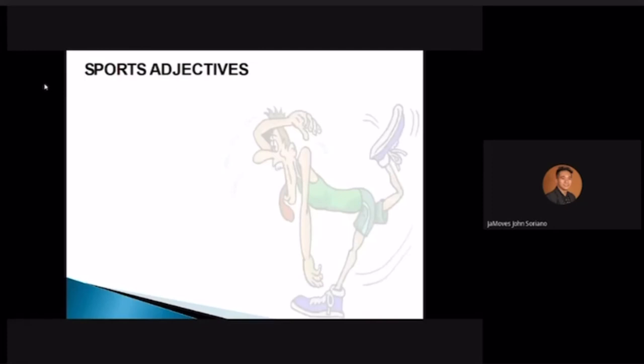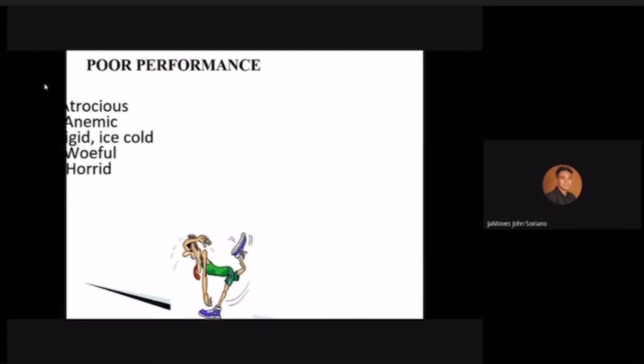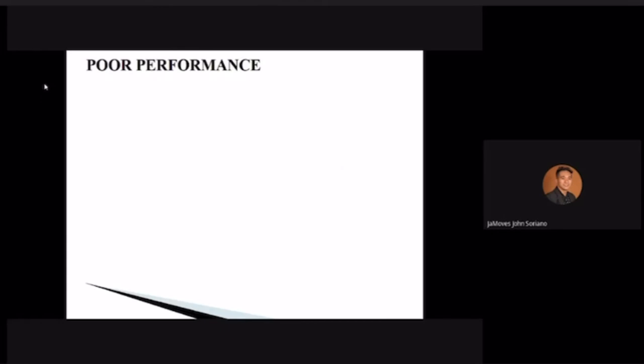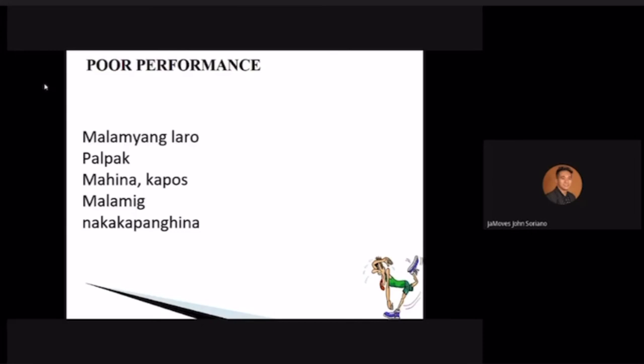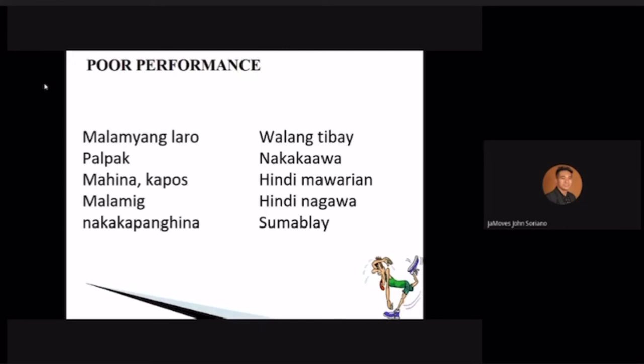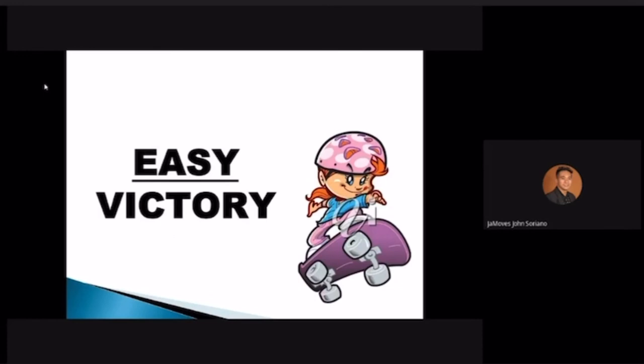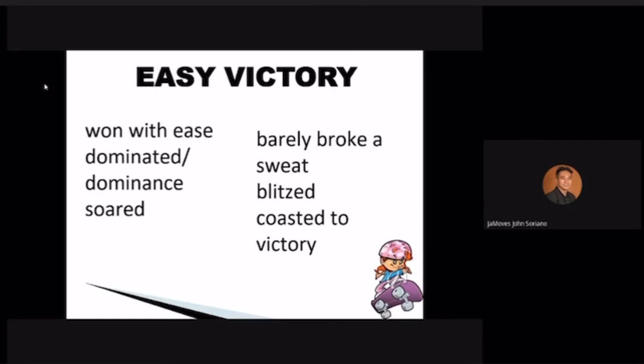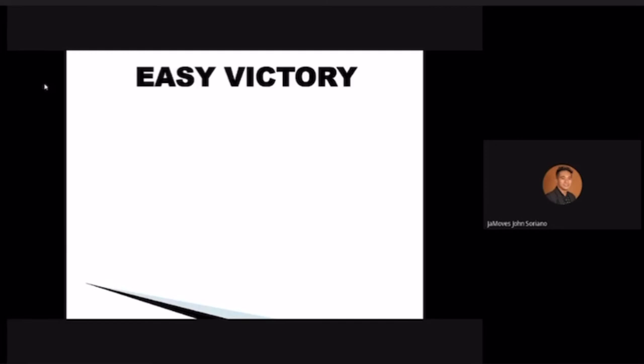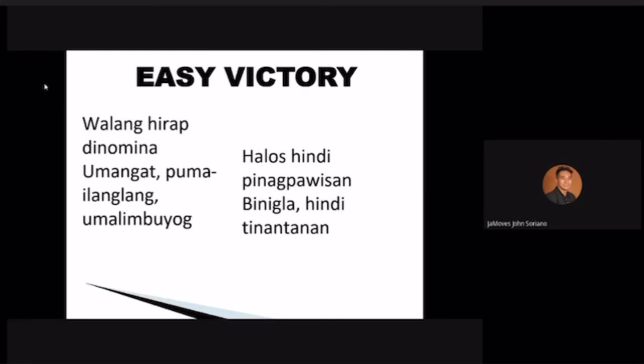Sports adjectives for poor performance: 'atrocious,' 'anemic,' 'pathetic.' In Filipino: 'malamiang laro,' 'palpak,' 'walang tibay,' 'nakakaawa.' You can exaggerate in sports writing — you can give your opinion, narrate, and describe. For an easy victory: 'dominated,' 'blitzed,' 'coasted to victory,' 'without breaking a sweat.' In Filipino: 'walang hirap,' 'binomina,' 'umangat,' 'pumailang-ilang.'